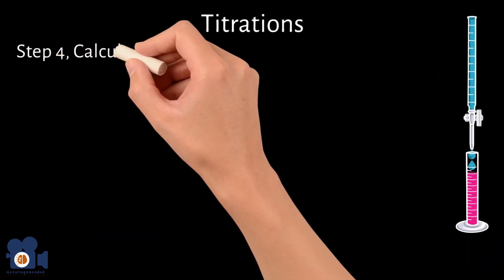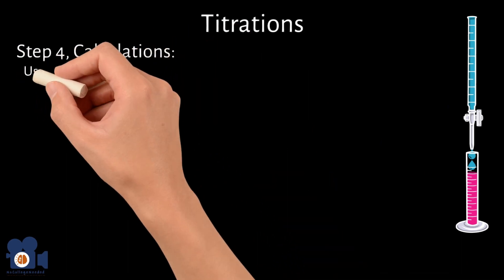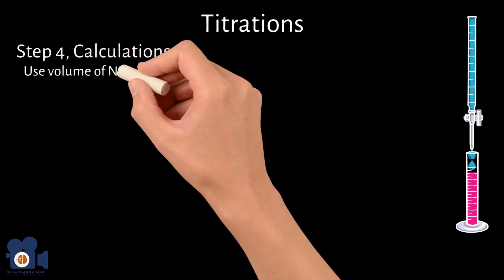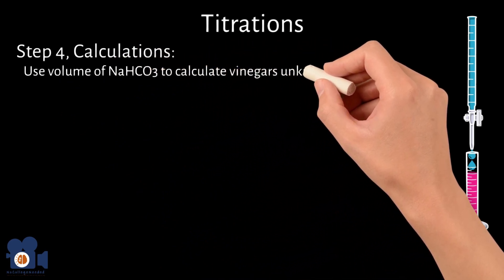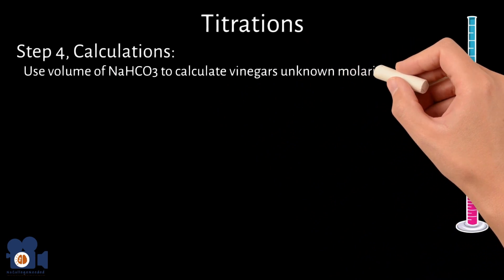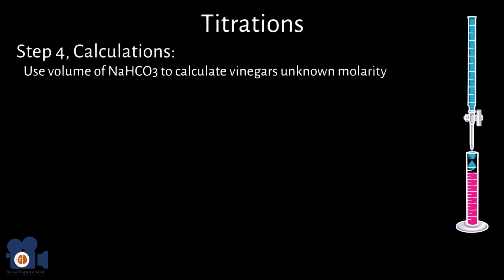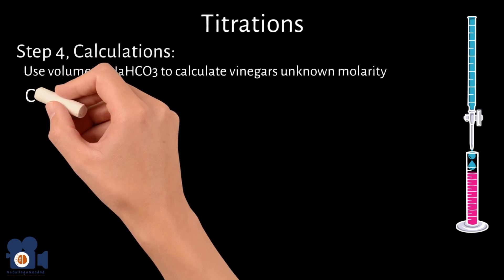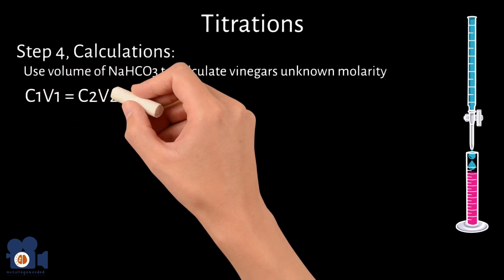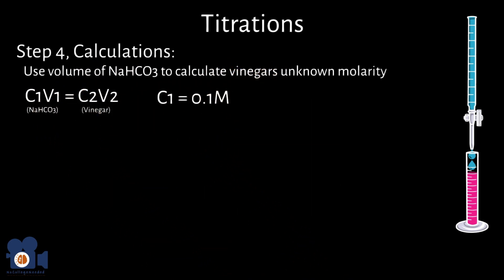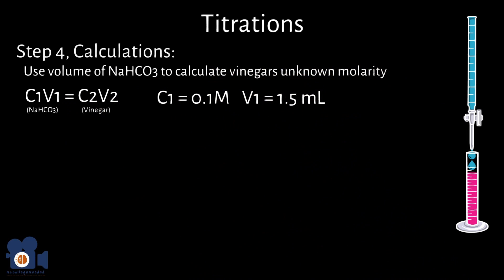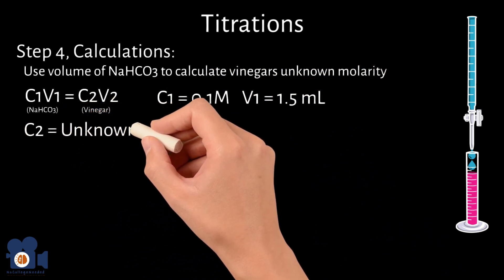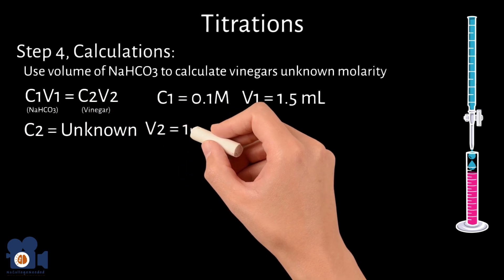Step four, calculations. We've reached the final step. Using the volume of the NaHCO3 solution used at the endpoint and its known concentration, we can calculate the exact amount of acid present in the vinegar sample. This, in turn, tells us the concentration of the vinegar solution. To do this, we use the equation C1V1 equals C2V2, where C1 equals 0.1 molar, V1 equals 1.5 milliliters for the sodium bicarb. C2 is the concentration of the vinegar that we're solving for, and V2 is 10 milliliters.